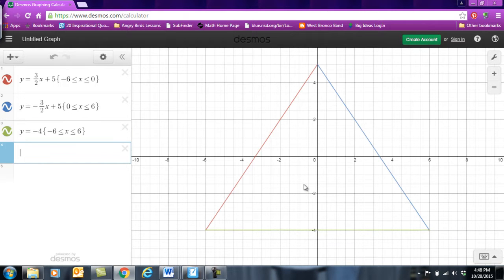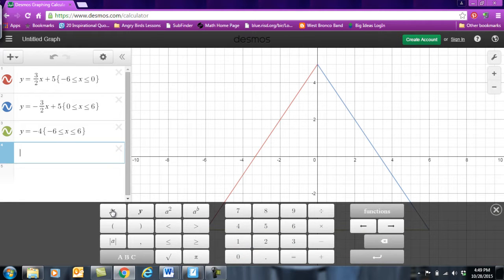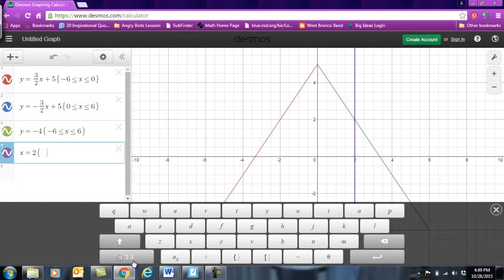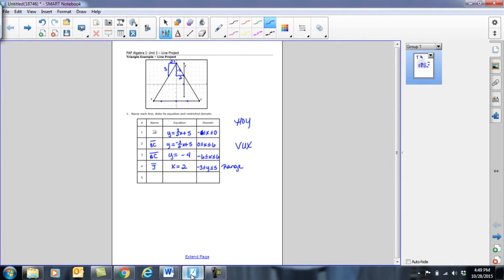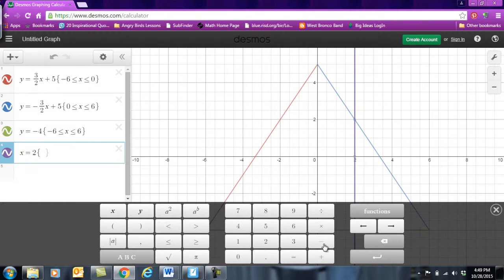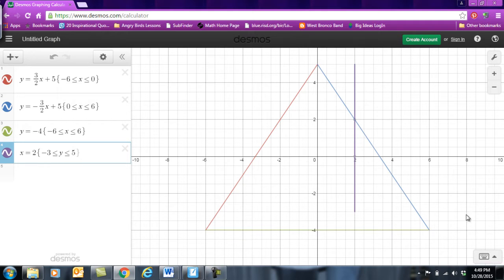So let's do the vertical line so we can get that one on there too. And so the vertical line was x equals and it was x = 2. And then we had to set our restriction. And it's going to understand when I put the y in there that it's range and not domain. And so my range restriction it looks like was from -3 to 5. So I'm going to go -3 ≤ but this time I put a y ≤ 5.